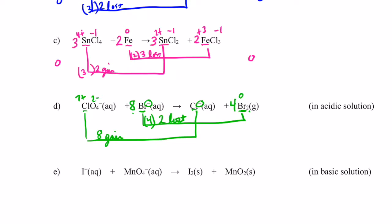Now we can balance the ionic charge. I have a perchlorate ion — negative one — and eight bromide ions — negative eight — for a total of negative nine on the reactant side. On the product side, I have one chloride ion — negative one — and bromine is neutral. So I need to add eight H pluses to the reactant side to give me a negative one ionic charge on both sides. Then finally I'll balance all hydrogens using water. I have eight hydrogens on the left side, so I add four H2Os on the right side. Checking oxygens — four on this side and four on the product side. That is a balanced redox equation.